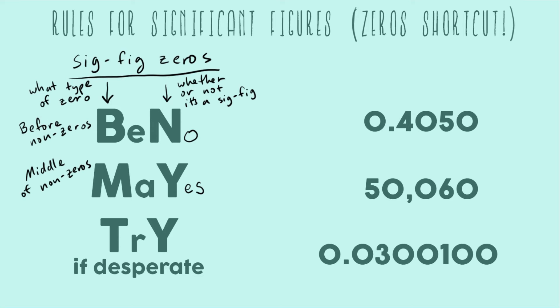And then the last type of zero, the try, that's talking about trailing non-zeros. And so those are any zeros that happen after all your numbers. And so the answer for this is yes if desperate. And so the mnemonic means it's yes if there's a decimal.